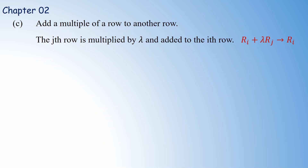The third elementary row operation is adding a multiple of one row to another row. Suppose you want to change Ri by multiplying the j-th row by lambda and adding it to Ri; this gives the new Ri. That means we multiply the j-th row by a non-zero lambda and add it into the i-th row to change the i-th row.